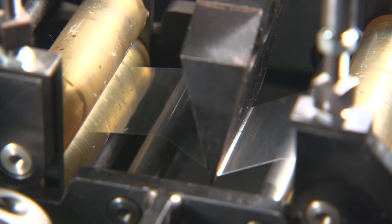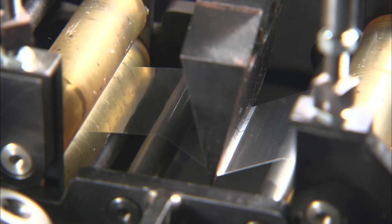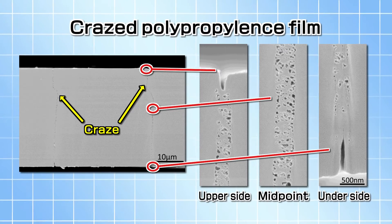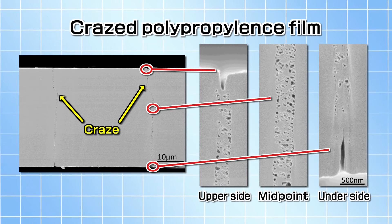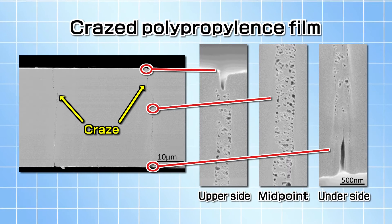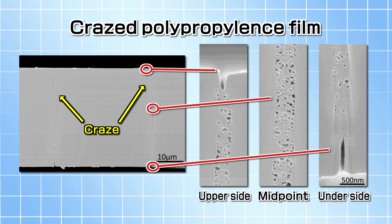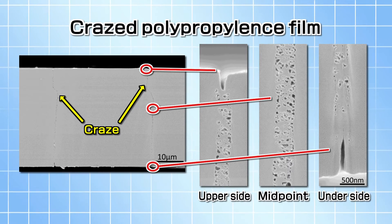We generate a controlled, well-ordered high-order structure of the film. I would like to explain another property of the craze. This is a cross-sectional image of the polypropylene film after crazing. You can see many voids in nano-size.